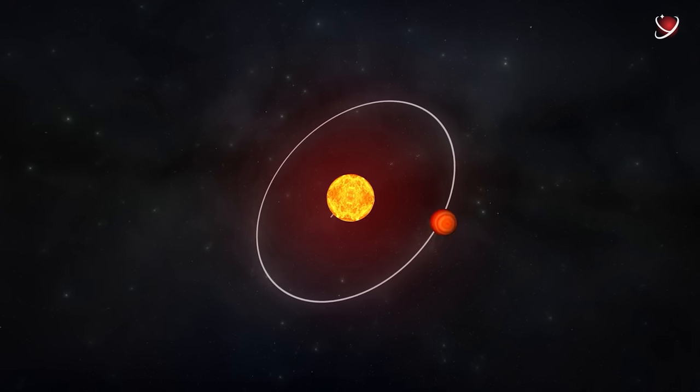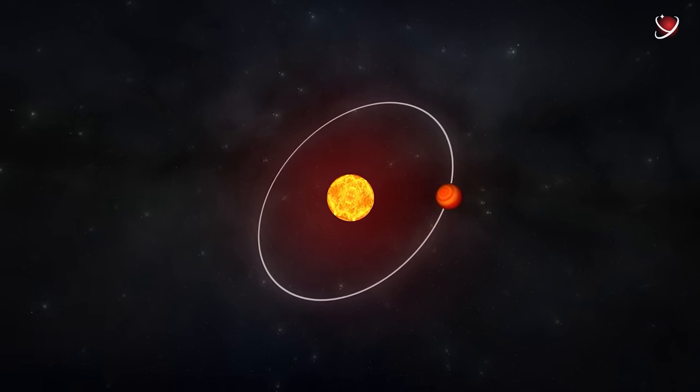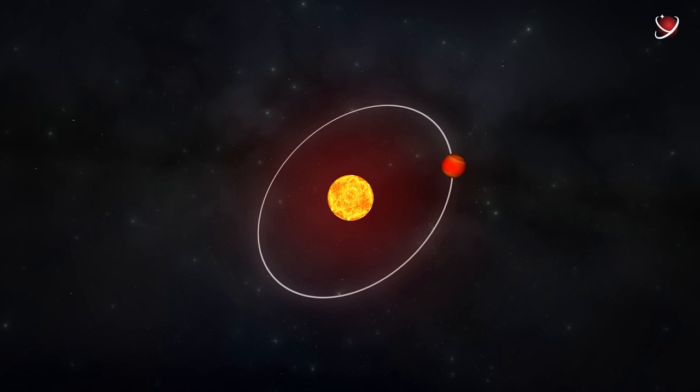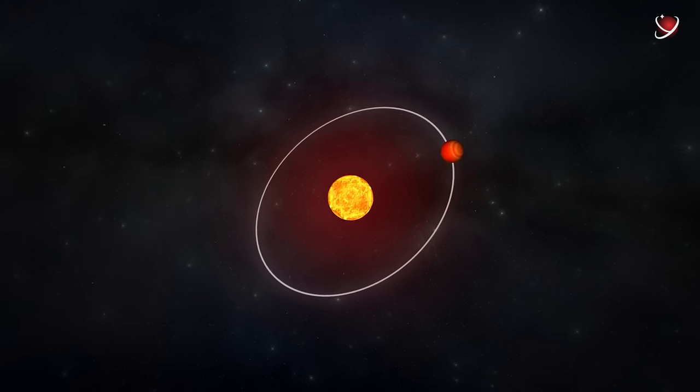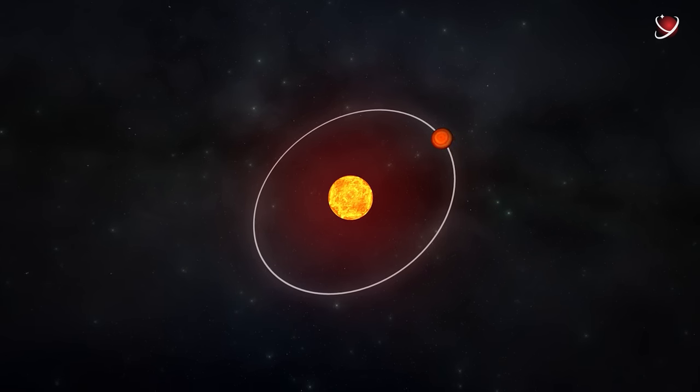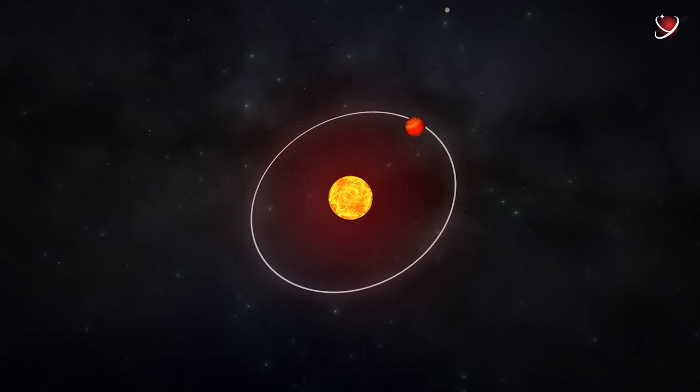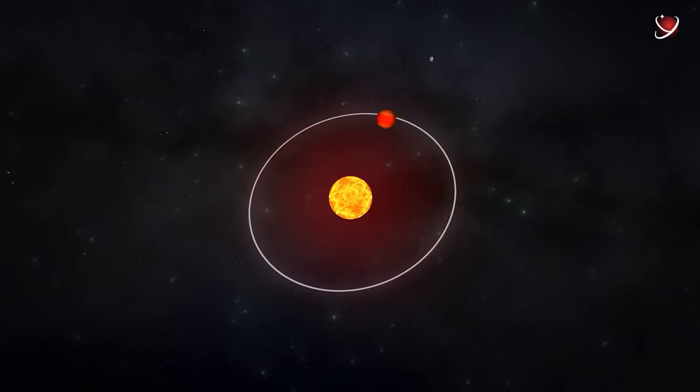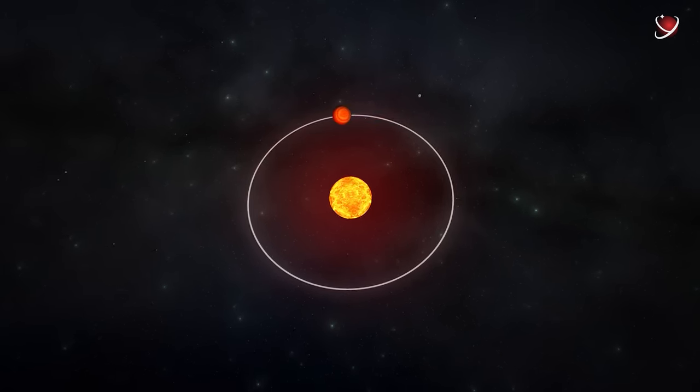For comparison, the farthest point in Pluto's orbit is only 49 astronomical units. And here it is almost 600. Why is the young giant planet so far from its parent star? It remains a mystery to be solved.